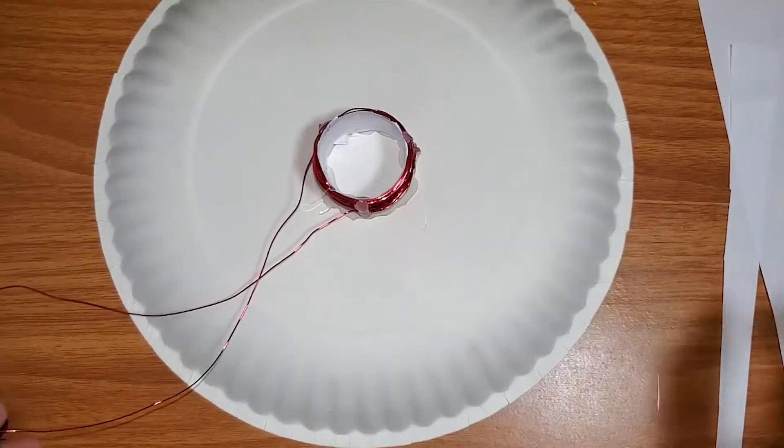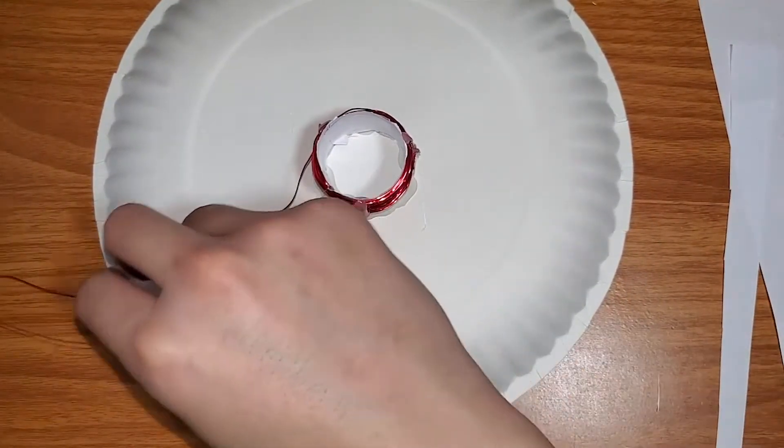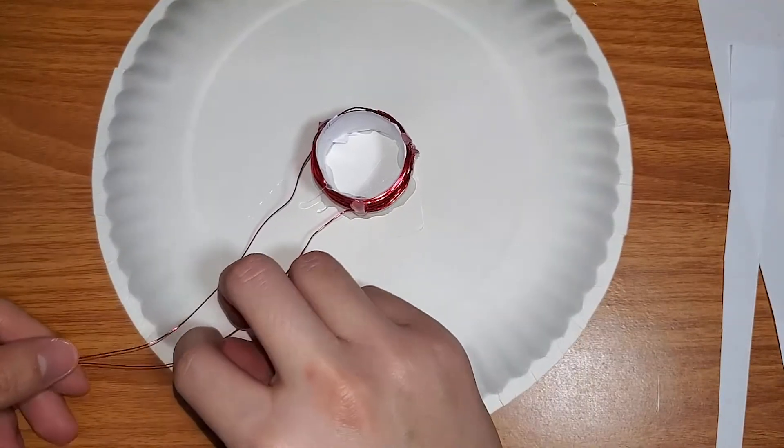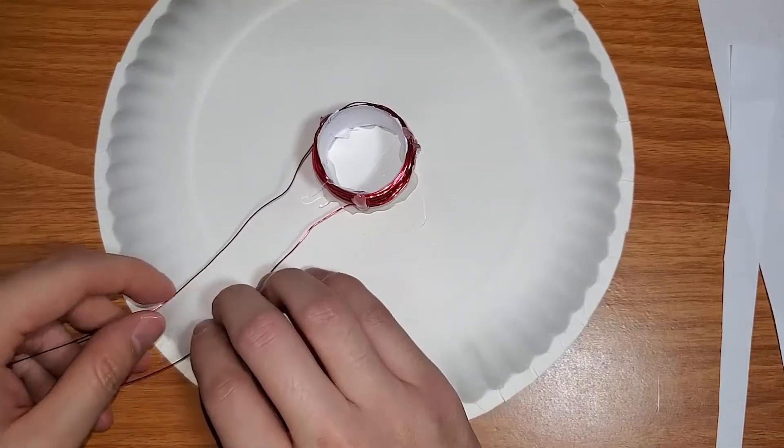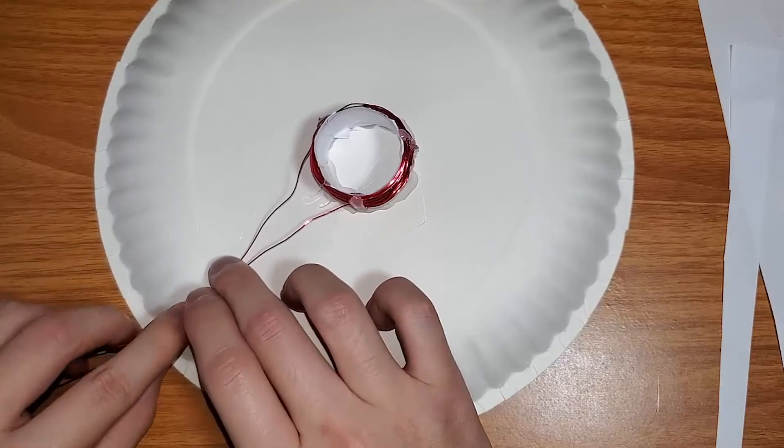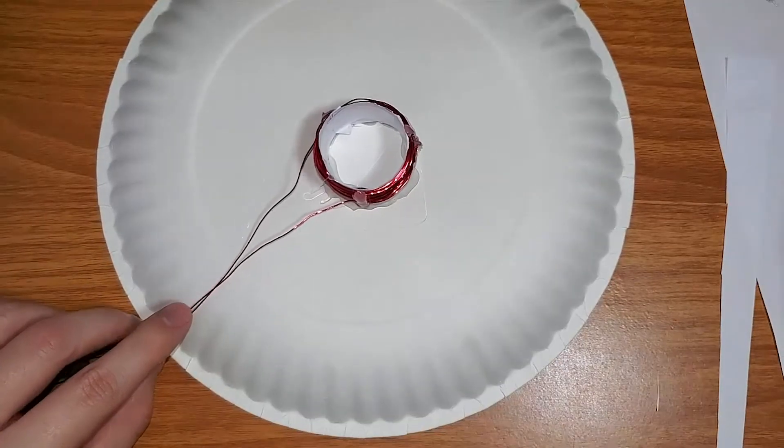As we let this glue dry, what we're going to do is take our two copper wires here. These are going to be our lead wires and we're going to go ahead and also glue them onto the end point of our paper plate.